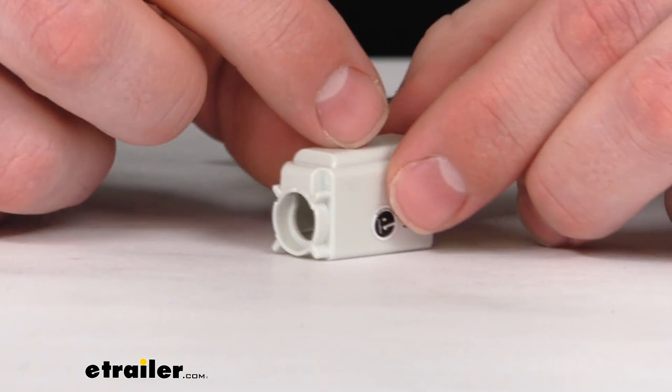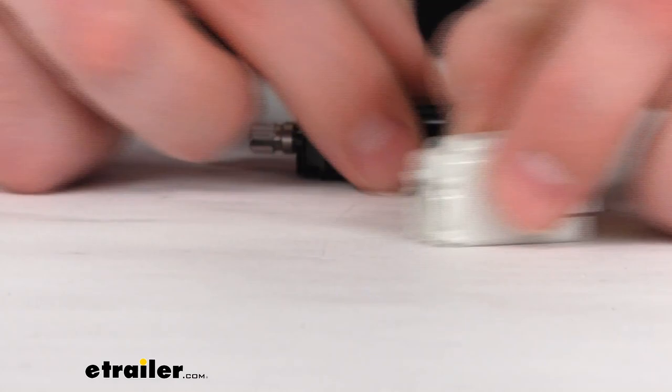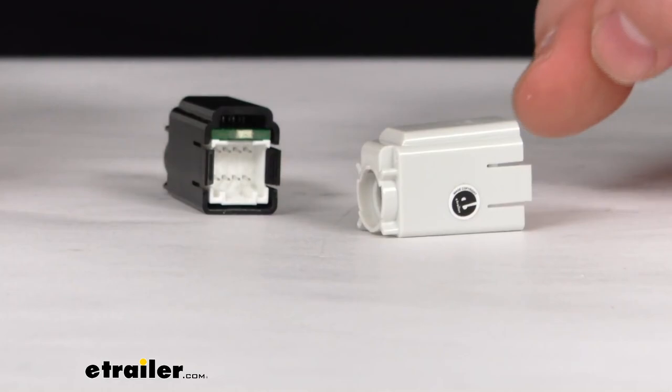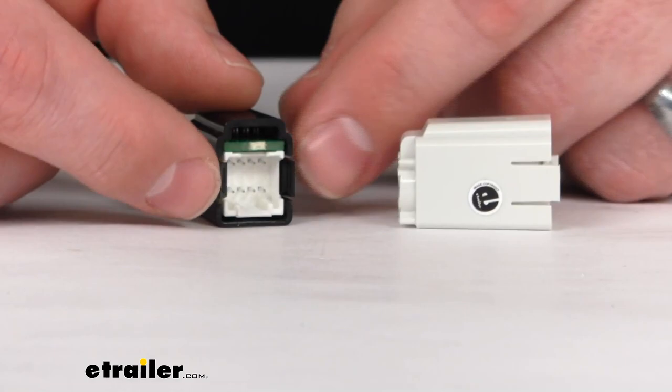So our replacement is going to be designed for dashboards between 3/32nds of an inch and 3/16th of an inch thick. So if the original isn't fitting your dashboard, this is going to be a great option to allow you to mount that control knob where you want to.